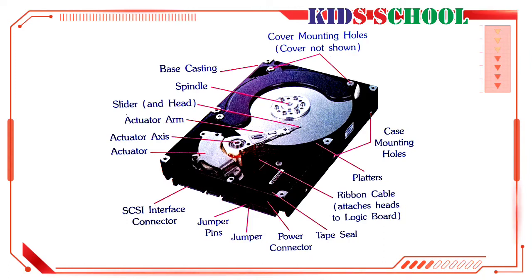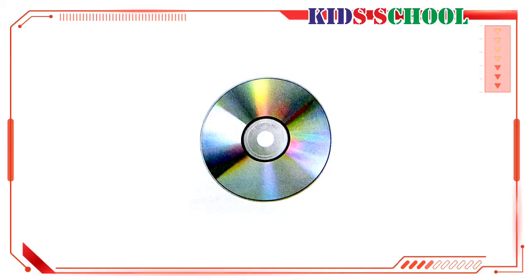The hard disk drive is housed inside the CPU box. The computer can read from or write on the hard disk. The hard disk stores all the information on its magnetic area, so information stored in the hard disk will not be erased even if there is an interruption in power supply or if the computer is switched off. Hence, the hard disk is a permanent storage device.